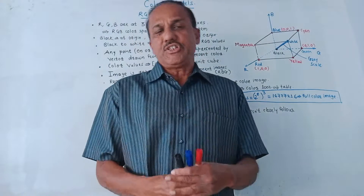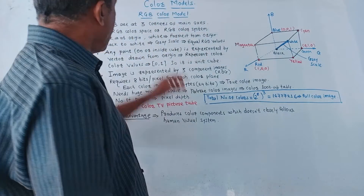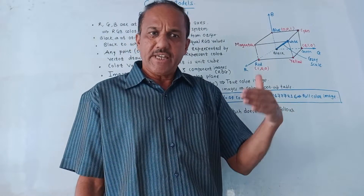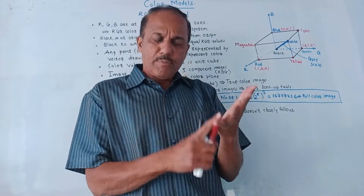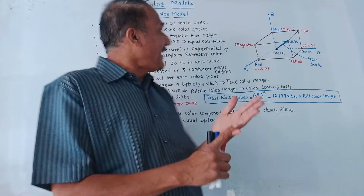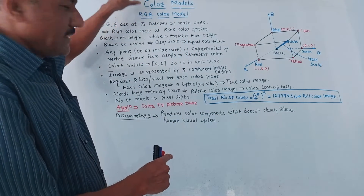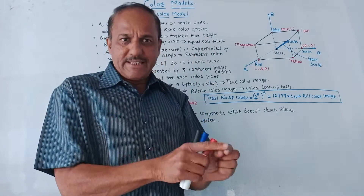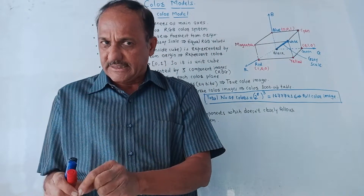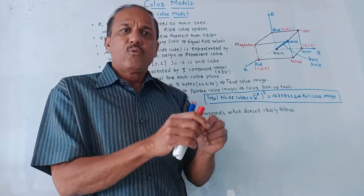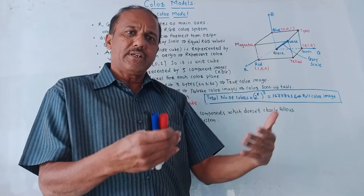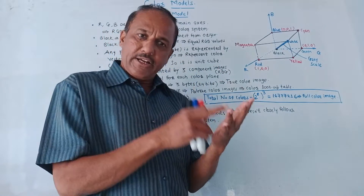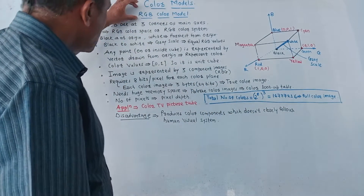Hello and welcome back to this channel. Today's topic is color models which are used in digital image processing. We'll be studying different color models like RGB, that is Red Green Blue color model, then HSI, that is Hue Saturation Intensity color model, and some other color models like CMY, that is Cyan Magenta and Yellow color model.